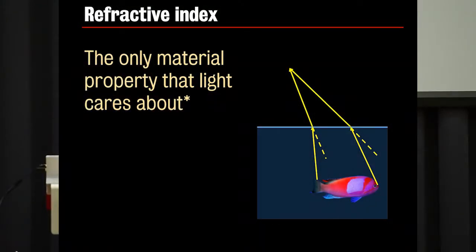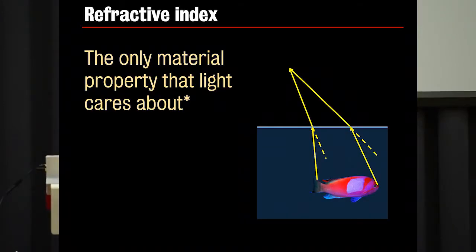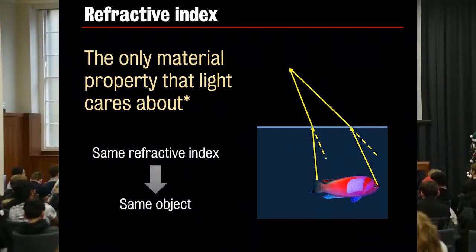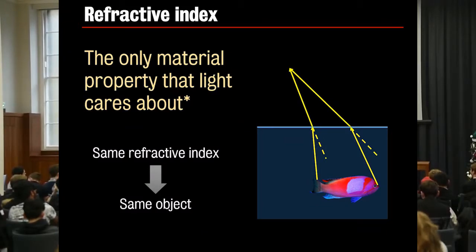Now this is important. So this refractive index is the only material property that light cares about. So what do I mean by this? So when you have a material, you can ask many things about it. Is it a solid? Is it a liquid? How hot it is? Can you squish it? Many things. But from the point of view of light, we only care about the refractive index. I put an asterisk because actually the refractive index comes from two parts, an electric and a magnetic part, but we don't have to know this for now. So it only cares about the refractive index. And this means that if two things have the same refractive index, from the point of view of a ray of light, they are the same object.